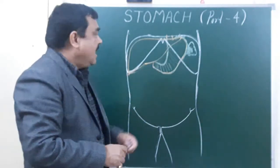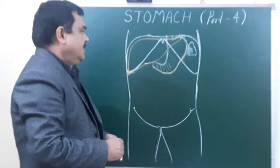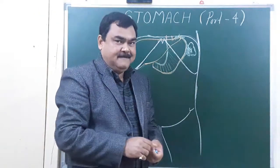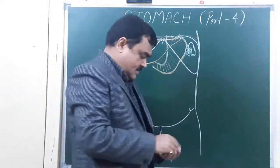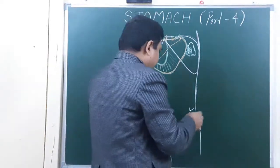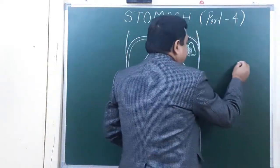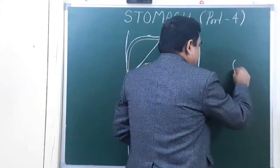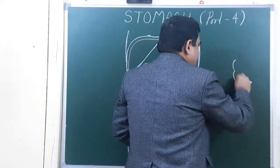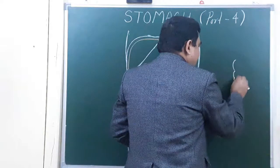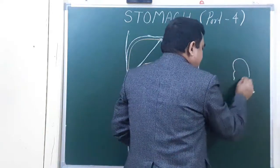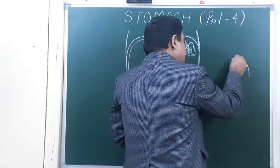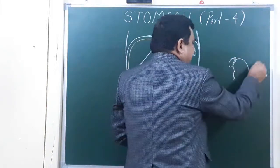This is the anterior relation and posterior relation. Posterior relations form the stomach bed. These structures are — here is the position of the left kidney. This is the left kidney, here is the suprarenal gland, and this is the left suprarenal gland.